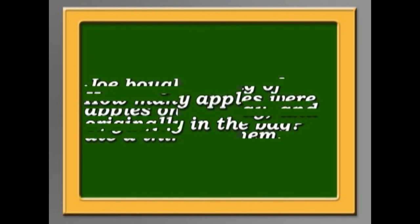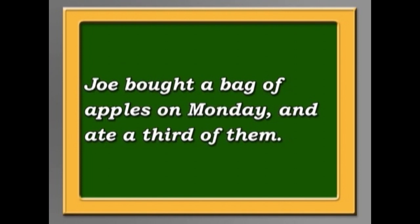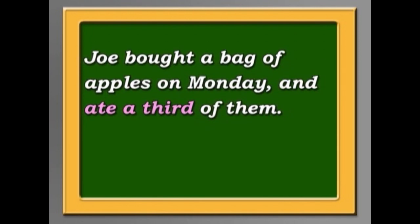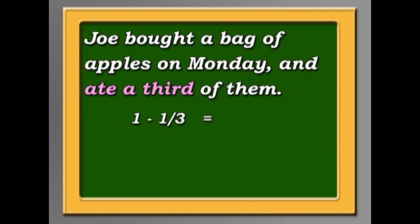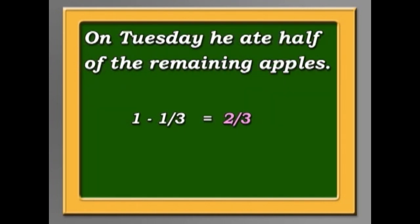Let's start from the beginning. He bought a bag of apples and ate a third of them. One minus a third equals two-thirds. Now on Tuesday, he ate half of the remaining apples. So what is half of two-thirds? One-third.